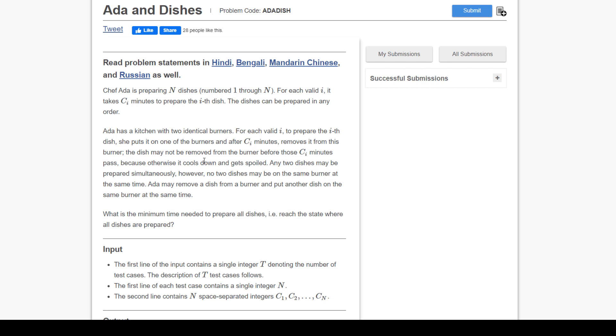Starting with the problem statement: Chef Ada is preparing n dishes numbered 1 through n. For each valid i, it takes Ci minutes to prepare dish i. For example, if C1 is 2, it takes two minutes to prepare the first dish. It's very simple. The dishes can be prepared in any order—it's not compulsory to start with the first dish. You can start from the back side or the front.